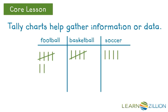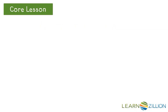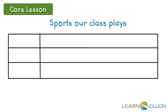Here is our tally chart again. Once we have our data or information gathered and recorded, we can use this to make a picture graph. In this tally group of football players we see that there are seven people that play football from our class, five people play basketball, and four people play soccer. We're going to have a title and our title for this is called Sports Our Class Plays. We're going to use a horizontal chart with our labels of football, basketball, and soccer.